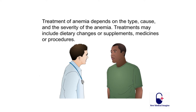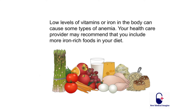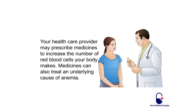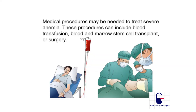Treatment of anemia depends on the type, cause, and severity. Treatments may include dietary changes or supplements, medicines, or procedures. Your healthcare provider may recommend more iron-rich foods or supplements such as iron, vitamin B12, folic acid, and vitamin C. Medicines may be prescribed to increase red blood cell production or treat an underlying cause. Medical procedures for severe anemia can include blood transfusion, blood and marrow stem cell transplant, or surgery.